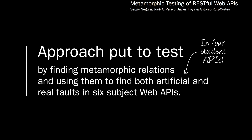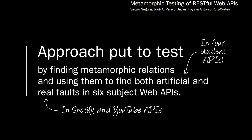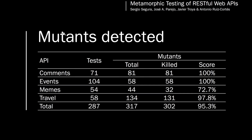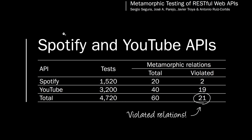They used automatically seeded faults in four APIs developed by undergraduate students using mutation testing, and real faults in the web APIs of Spotify and YouTube. In the student APIs, the authors identified between 5 and 14 metamorphic relations on each API, covering all six patterns. From these relations, 287 tests were derived and run, detecting 302 out of 317 introduced mutants — a mutation score of 95.3%.